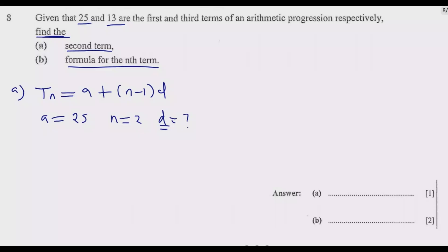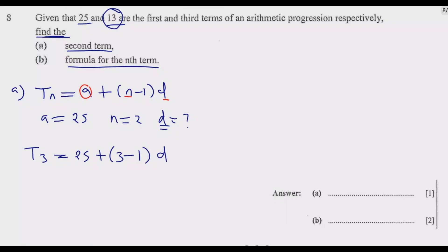So the first step is finding d. We know the first term and the third term, but not d. To find d, we use the third term: t₃ = 25 + (3 − 1)d, because n equals 3. We know t₃ is 13, so substituting: 13 = 25 + (3 − 1)d.